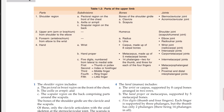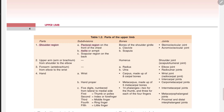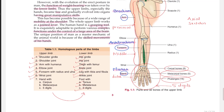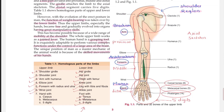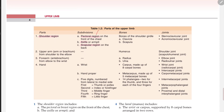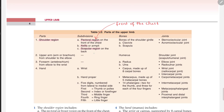Let's look at the shoulder region. The shoulder region is divided into three parts: the pectoral region, the axilla, and the scapular region. The pectoral region is the front of the chest. The axilla is the armpit. And the scapular region is the back of the chest.